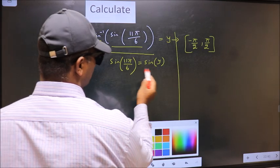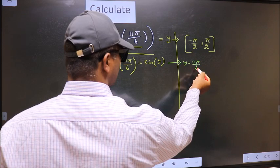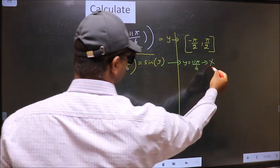Now comparing both sides, we get y to be 11 pi by 6. Does this lie in this interval? No. So we should reject this answer.